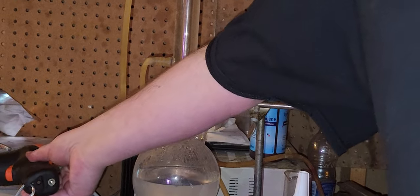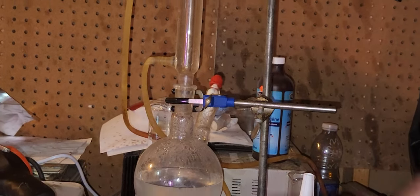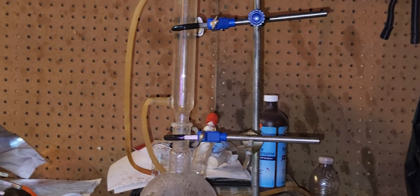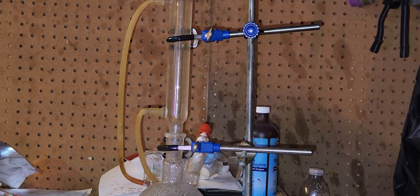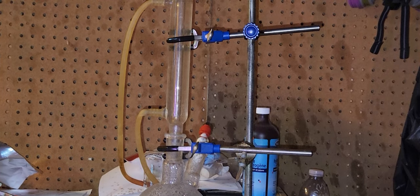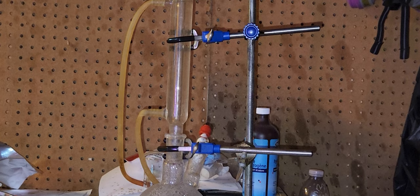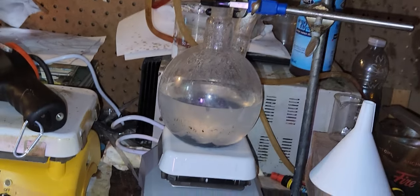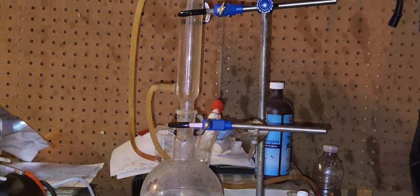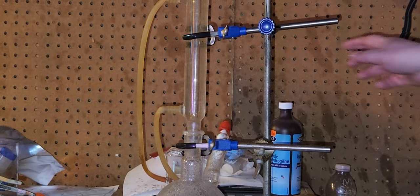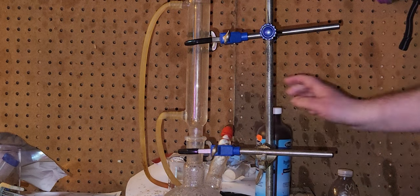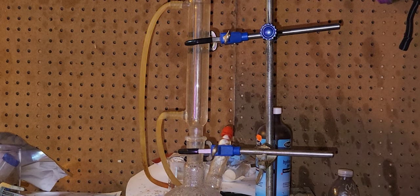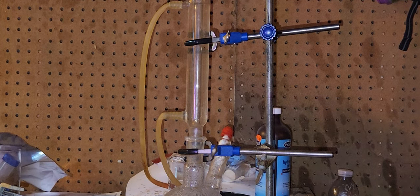The temperature is 52.2 degrees Celsius. If the method is too slow, I need to add 35% hydrogen peroxide. Right now I only have 3%, and I've been adding about 100 milliliters, but it won't do much because it's not strong enough.